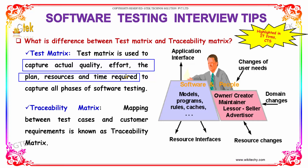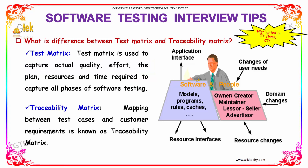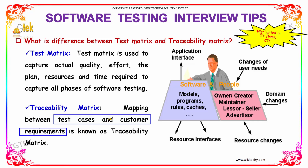Whereas your Traceability Matrix is a mapping between test cases and customer requirements, and it is known as Traceability Matrix. So using your Test Matrix, you can capture the actual time and resources that a person takes for performing software testing. Whereas in your Traceability Matrix, you will be mapping the test cases with the customer requirements and check whether they have been satisfied or not.